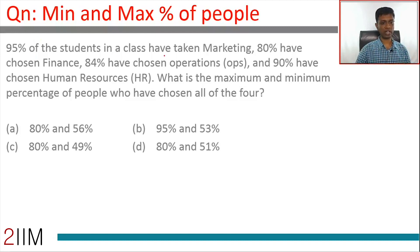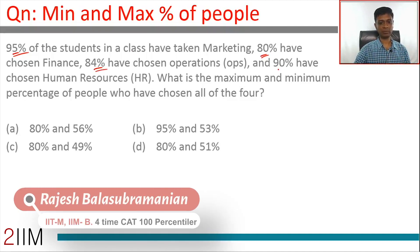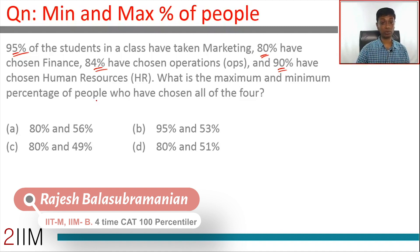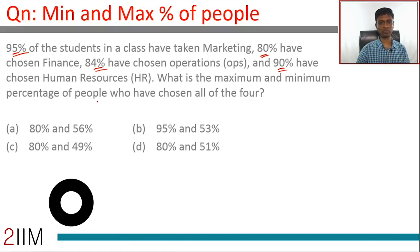95% of the students in a class have taken marketing, 80% have chosen finance, 84% have chosen operations, and 90% have chosen HR. What is the maximum and minimum percentage of people who could have chosen all four? We need to find the maximum and minimum of the intersection of these four sets.